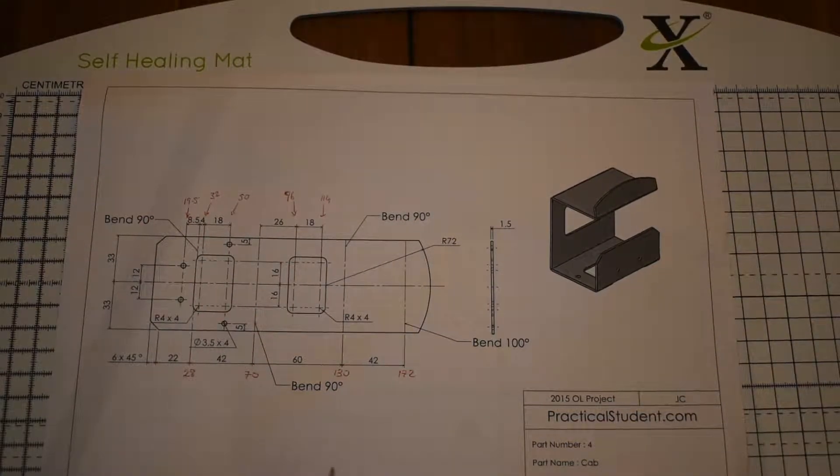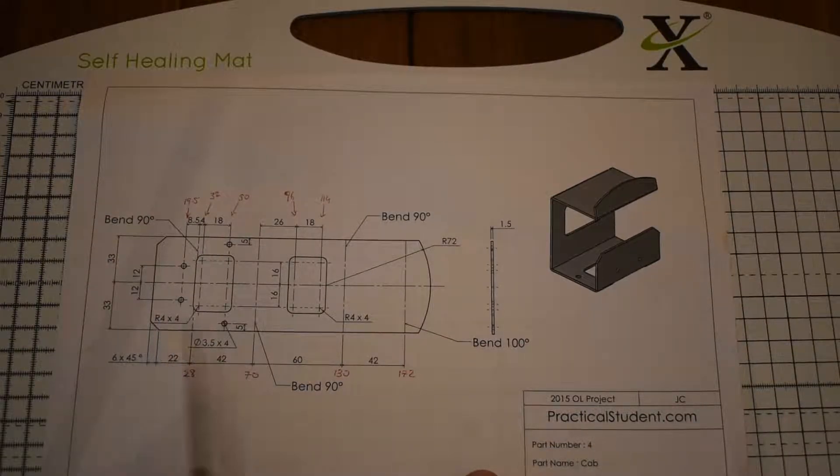Much like the previous part number three, the body, it looks more complicated than it actually is and if we break it up into sections it isn't so bad. Just like in the previous one, I added up using a calculator some of the dimensions to get totals from the left hand corner here.